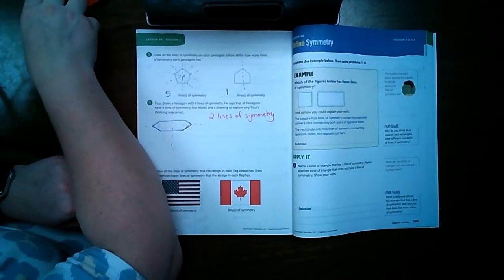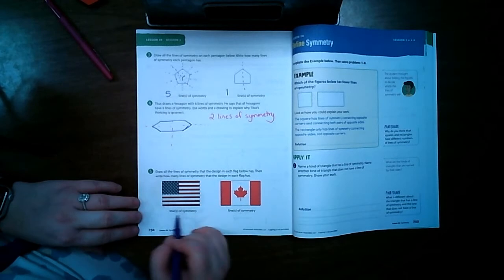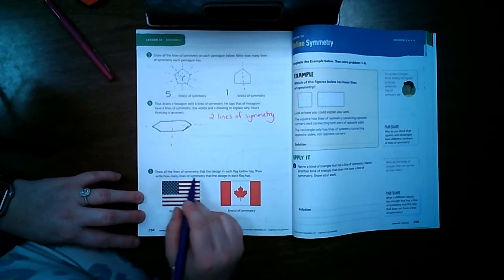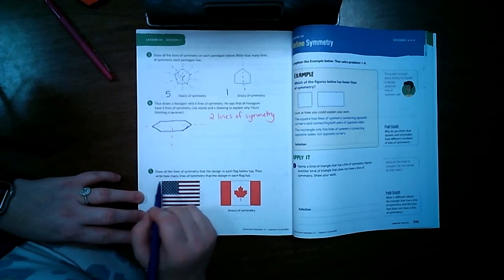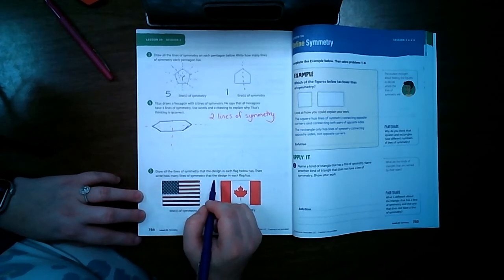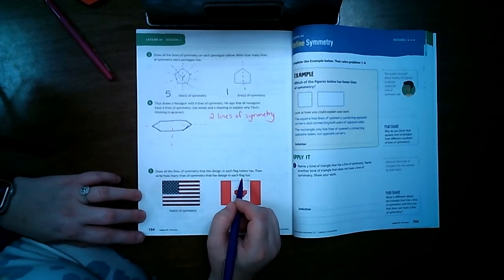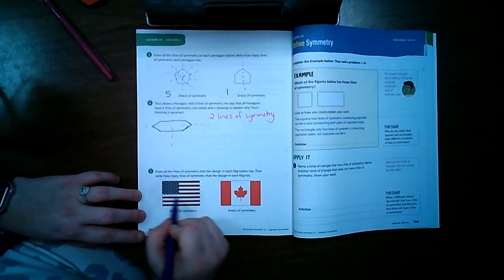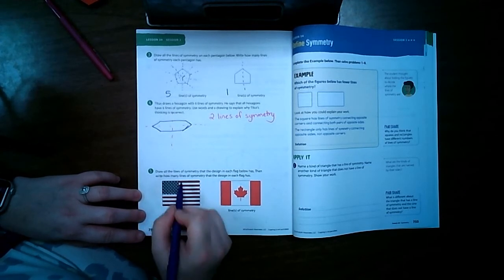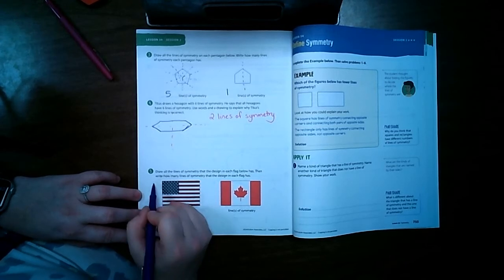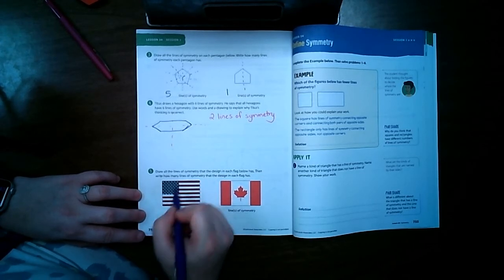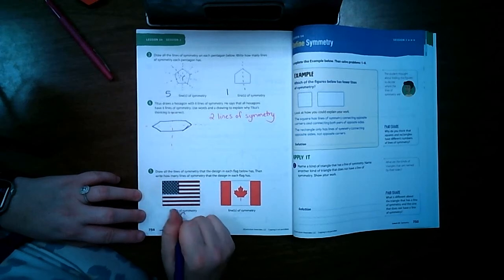Number five: draw all the lines of symmetry that the designs in each flag below has, then write how many lines of symmetry that the design in each flag has. You can't do it this way 'cause that's blue and this is red, can't do it this way 'cause that's blue and red. Oh maybe that way, nope 'cause that would fold over this way and that would be there. So the American flag has zero lines of symmetry.